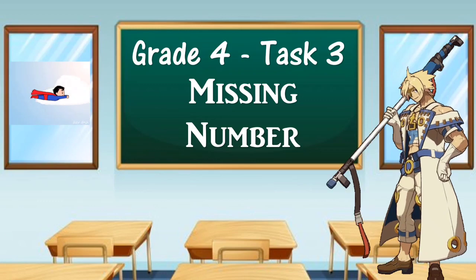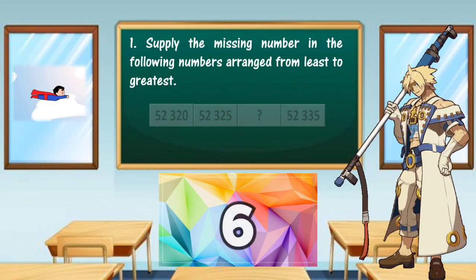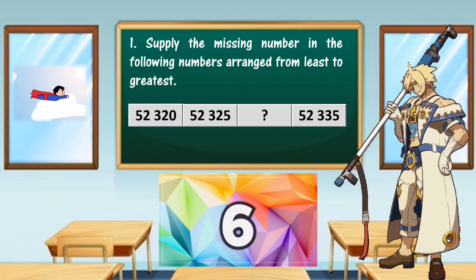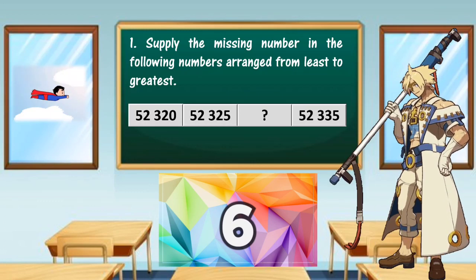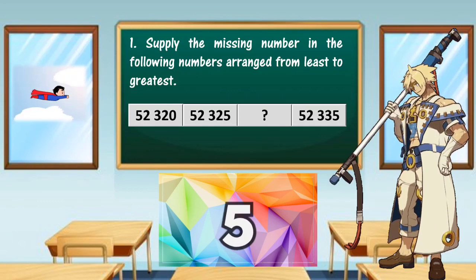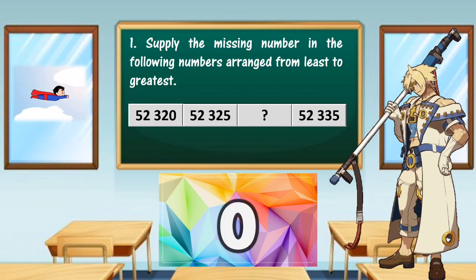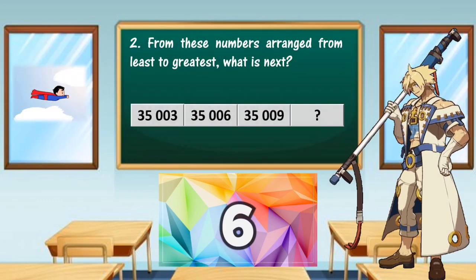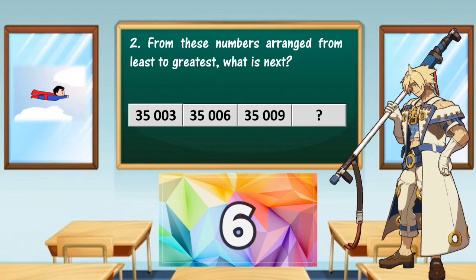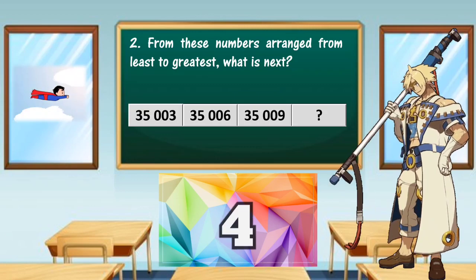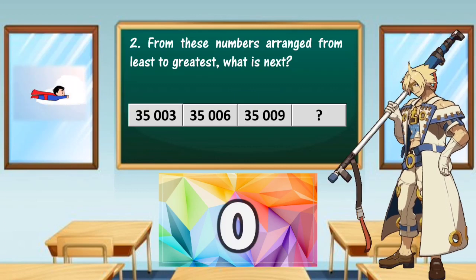Task 3: Missing Number. Number one: supply the missing number. In the following numbers arranged from least to greatest, what is next? What is next?